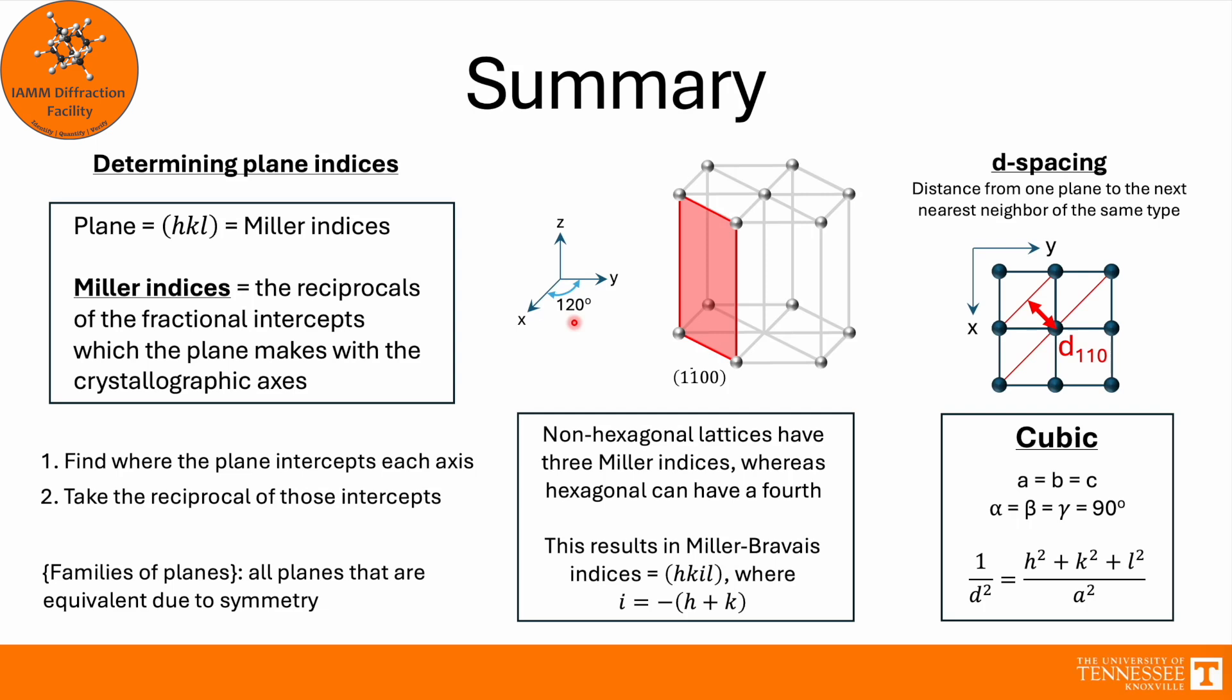In summary, determining plane indices, they are (hkl) in parentheses, and these are the Miller indices. You find the Miller indices by taking the reciprocals of the fractional intercepts which the plane makes with the crystallographic axes. Families of planes are all planes that are equivalent due to symmetry. With the hexagonal crystal system, we have four indices, and we get that fourth one, which is i, and it sits between k and l. That is simply the negative sum of h and k, and corresponds to this axis here. Finally, d-spacings are distances from one plane to the next nearest neighbor of the same type, and we just went over all of the different equations for the different crystal systems.